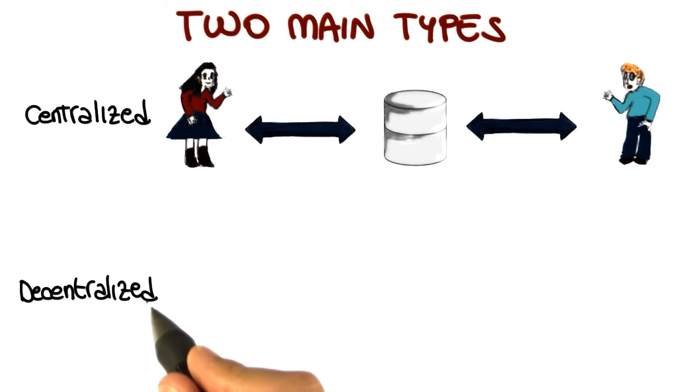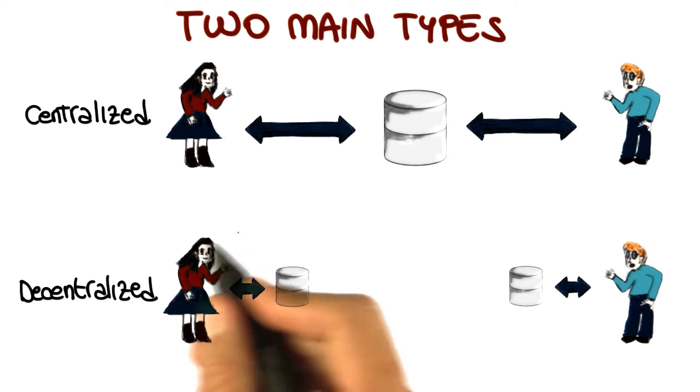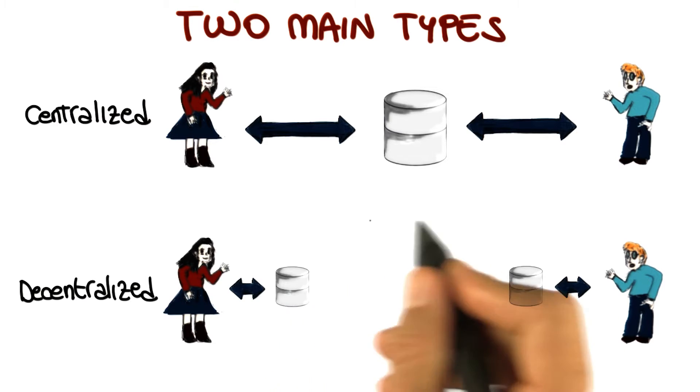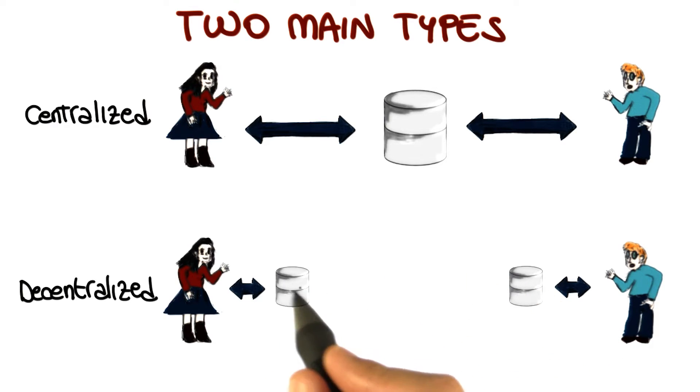The decentralized system is a little more interesting because in this case, they will both have sort of a local repository in which they can commit their changes. So they can commit changes without the other users of the VCS being able to see these changes.